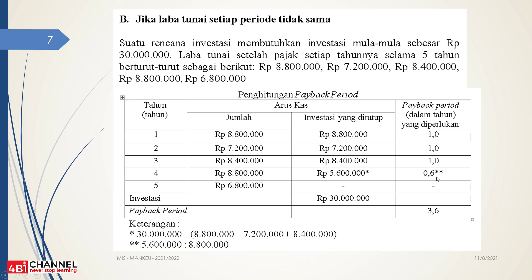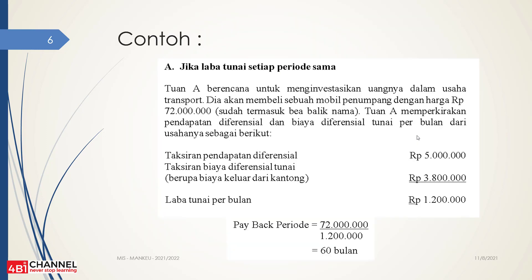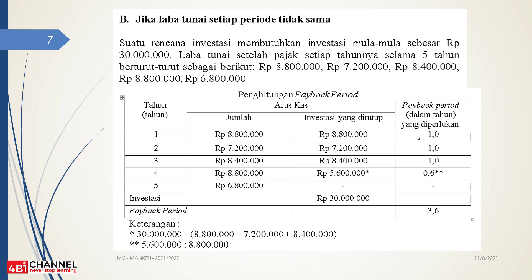Tambah baru dikurangi. 0,6 dapat dari mana? 5.600.000 itu dibagi dengan 8.800.000 — jumlah laba arus kas di tahun keempat. Dapatnya 3,6. Jadi kalau dibandingkan dengan yang tadi 60 bulan, kalau laba tunai periode tidak sama, didapatkan 3,6 tahun. Saya lebih prefer laba tunai setiap periode tidak sama, karena kita tidak bisa memprediksi bagaimana laba perusahaan bisa konsisten tiap tahun. Jadi saya lebih prefer ke cara yang ini, karena kita menghitung laba yang tidak sama.